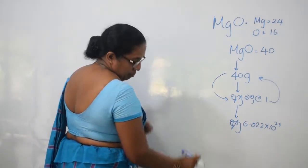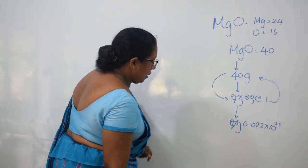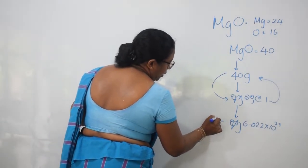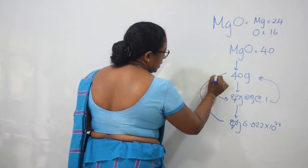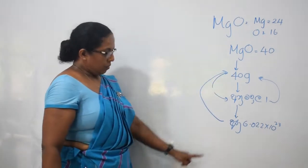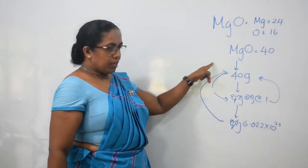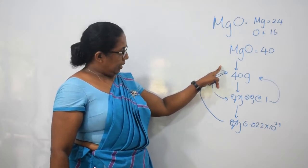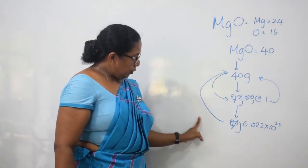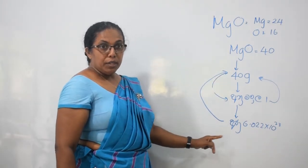Magnesium oxide — you can see — Avogadro-Sankhya Vakkiya, gram-hataniya. Gram-hataniya Vakkiya, Avogadro-Sankhya Vakkiya.